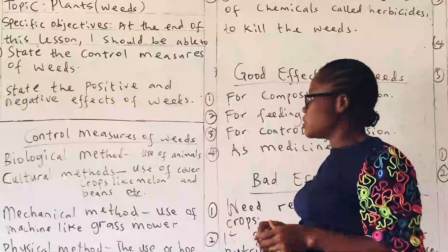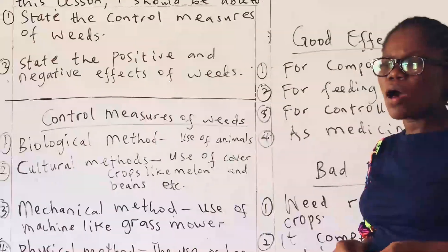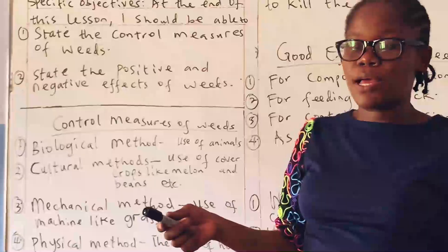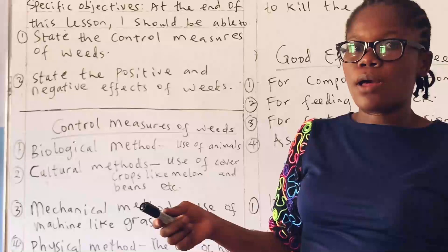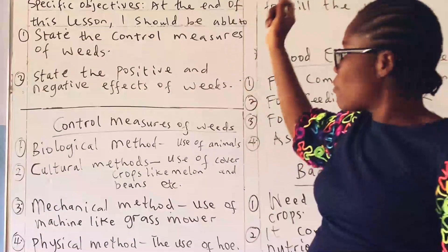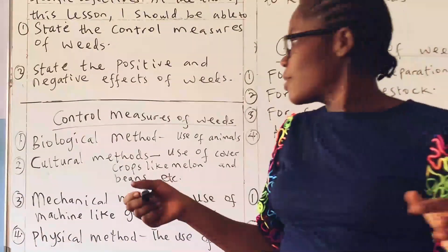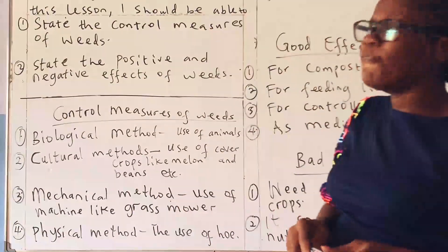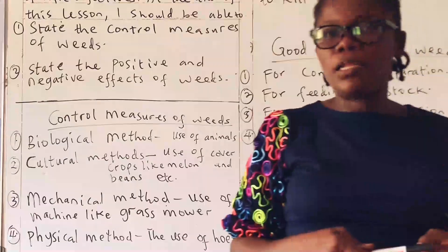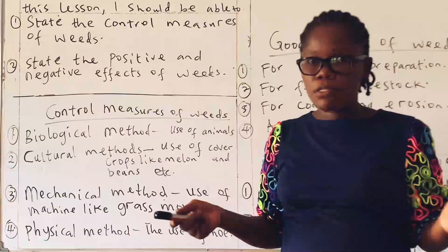The first thing we are going to consider is the control measures of weeds. Now how do we control these weeds? Remember we say they can compete with their crops, so we have to do something about it. These are the things we refer to as control measures. The first one on my list is the biological method.